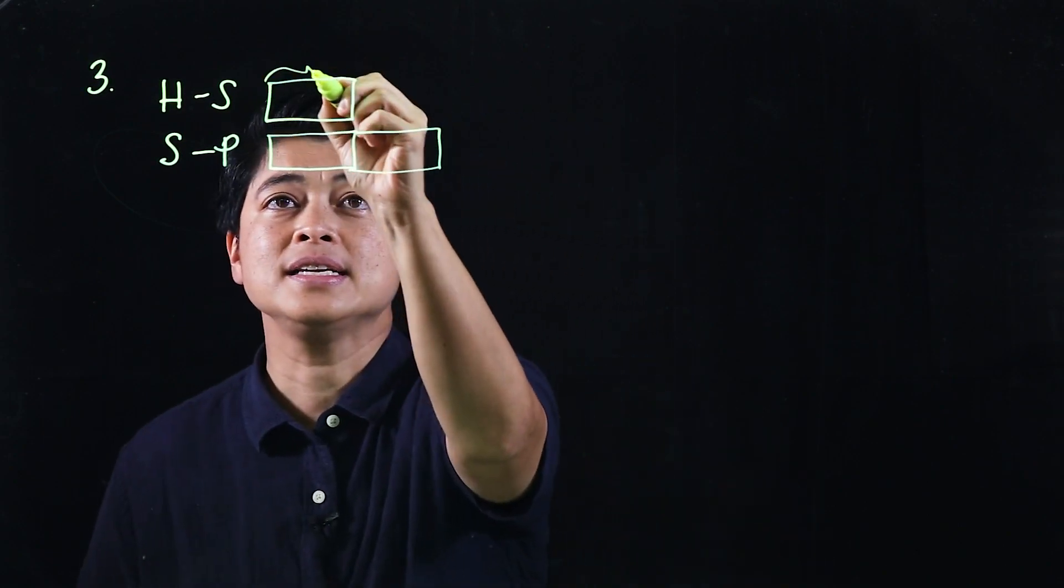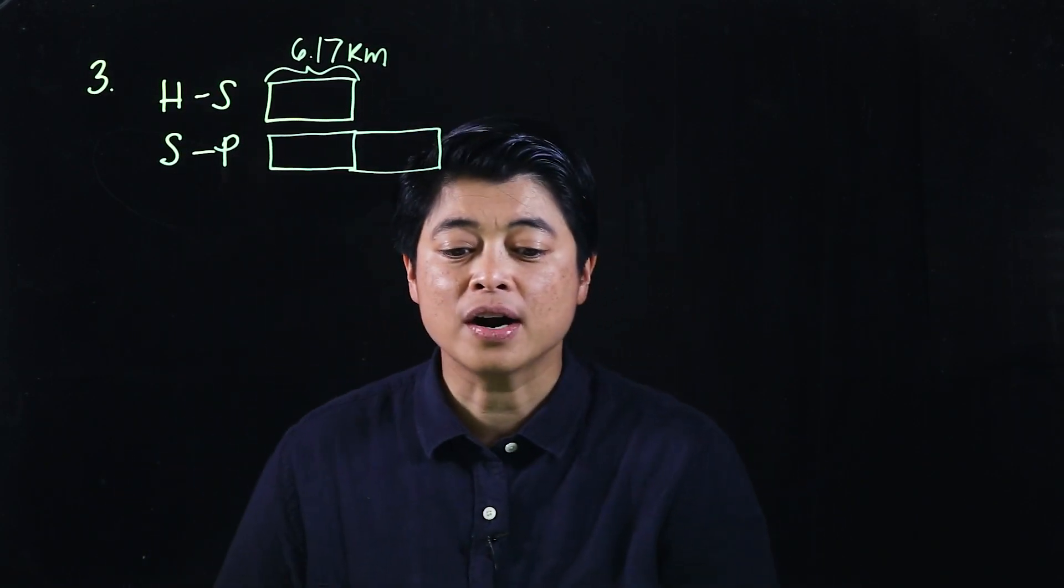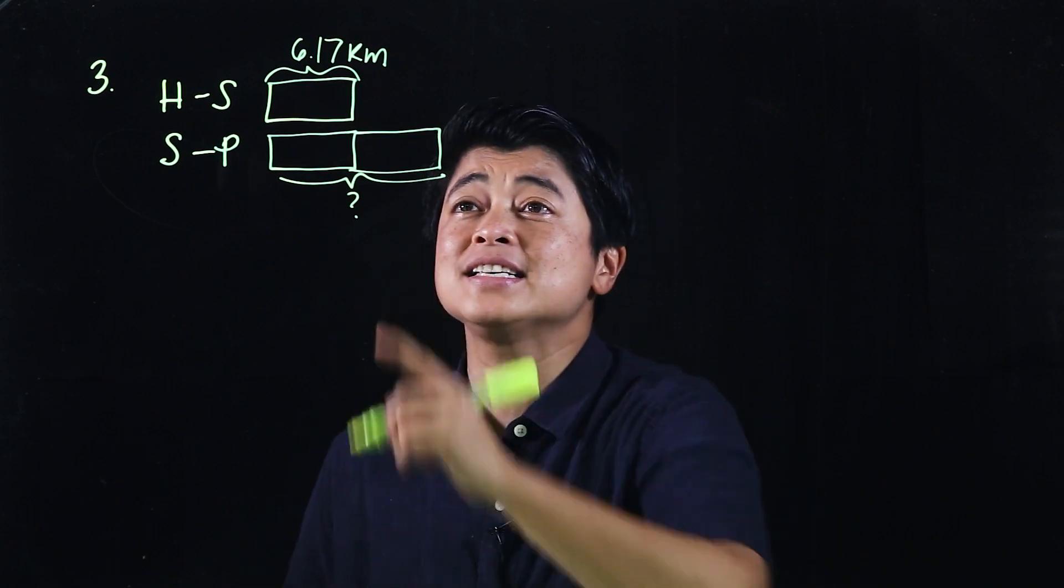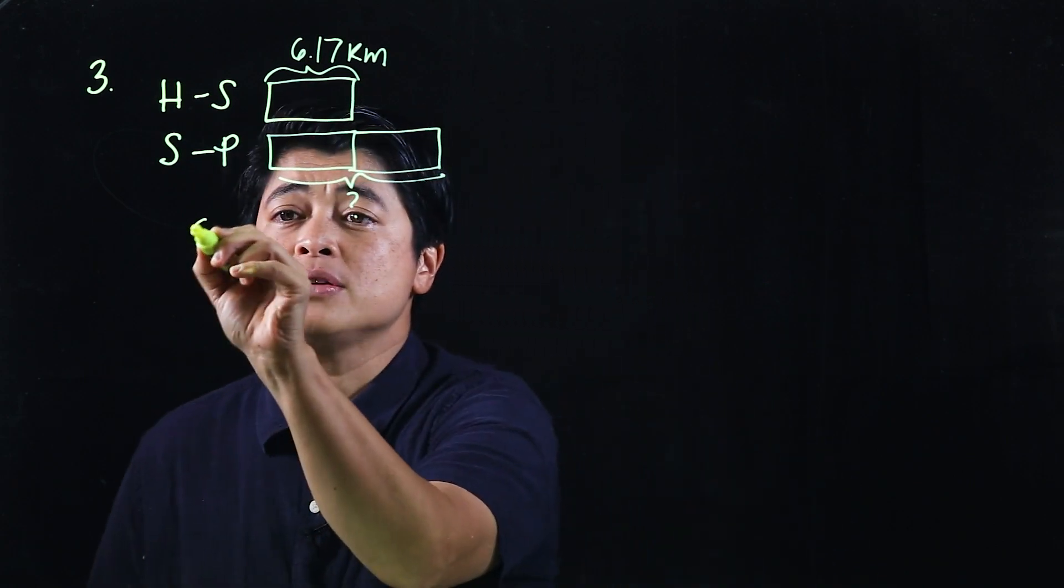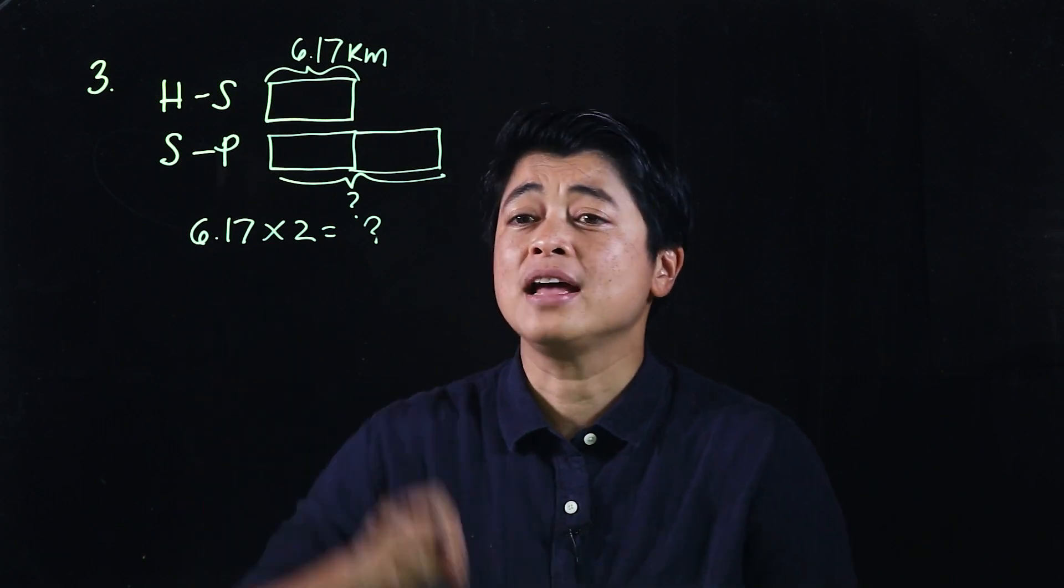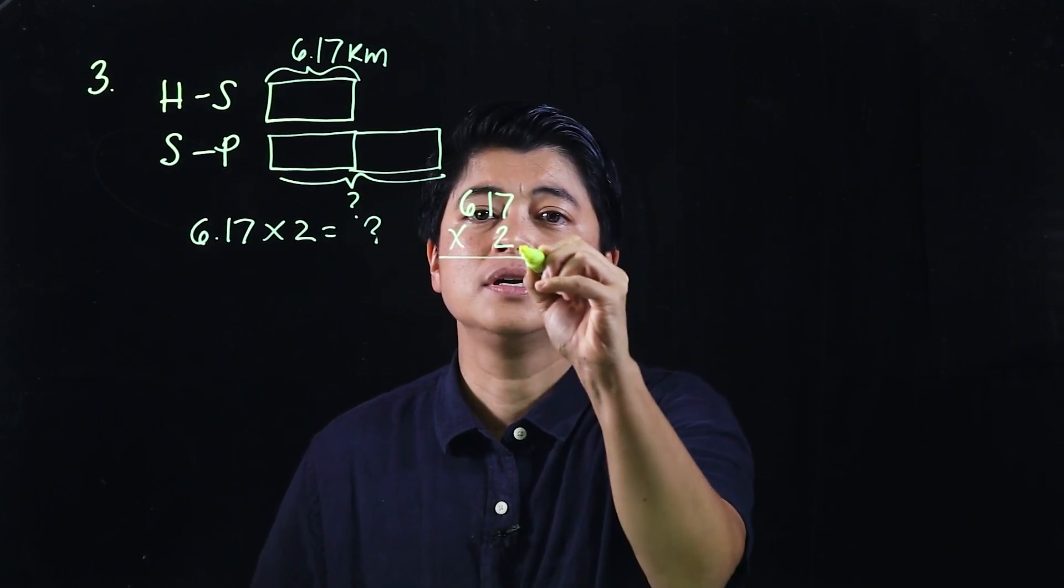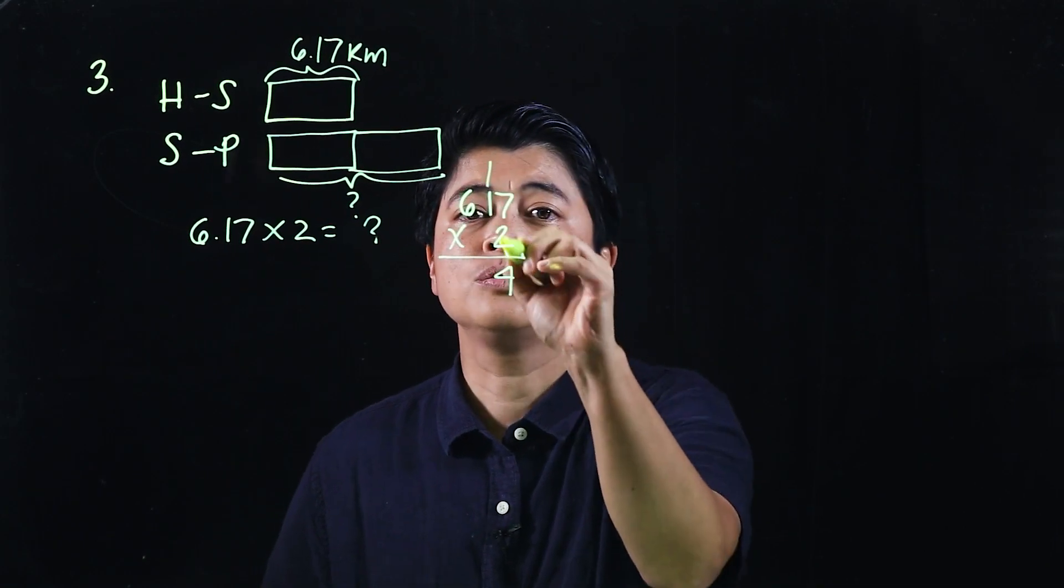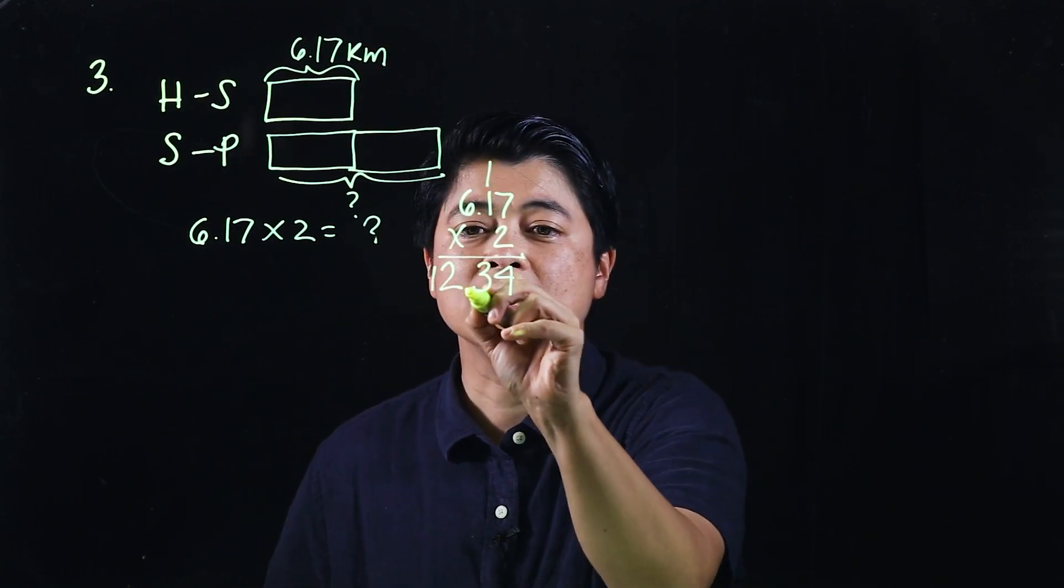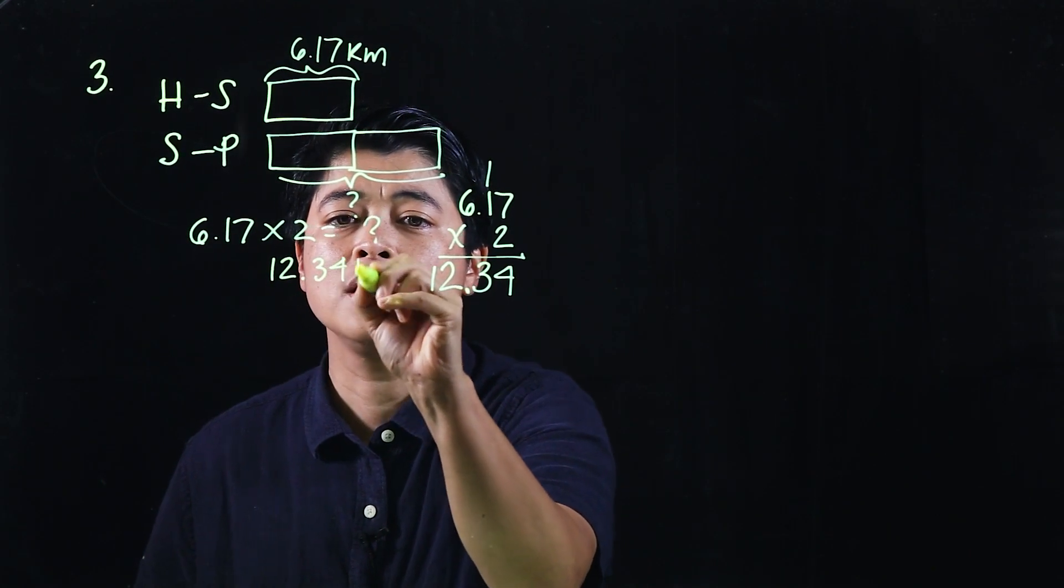Since this is 6.17 kilometers, the question is: how far is it from the park to the school? This is what we're looking for. Clearly, this is a multiplication problem, and our equation will be 6.17 times 2 equals question mark. If we can't do it mentally, we will do it computationally: 6.17 times 2. Multiply: that would be 4, 2 times 1 is 2 plus 1 is 3, and then 12. There are two decimal places, so the distance from the park to the school is 12.34 kilometers.